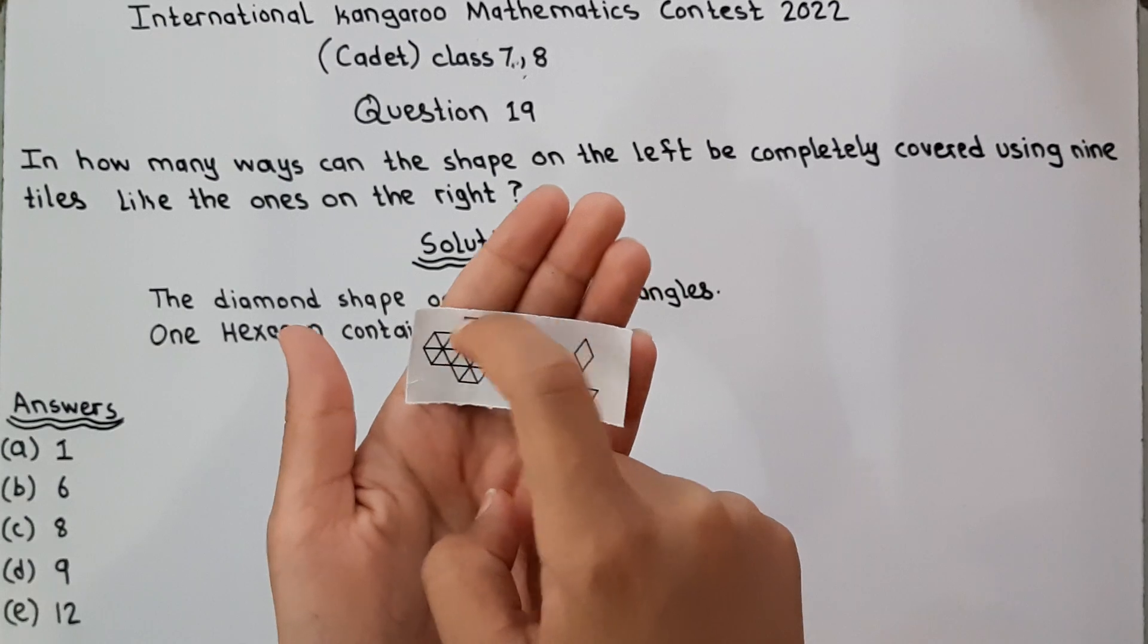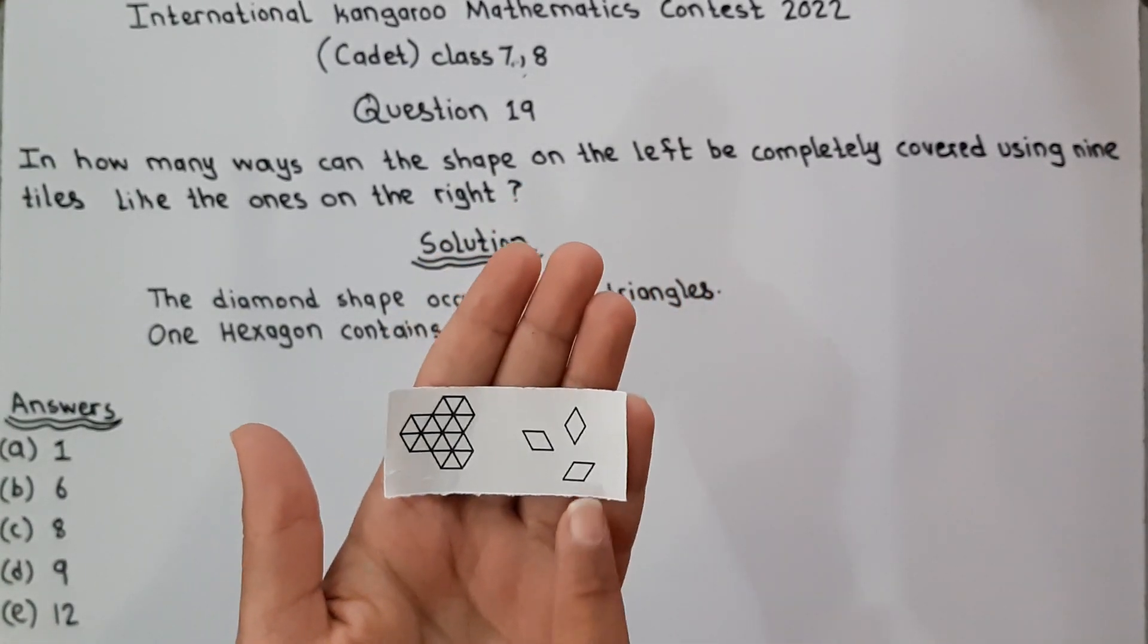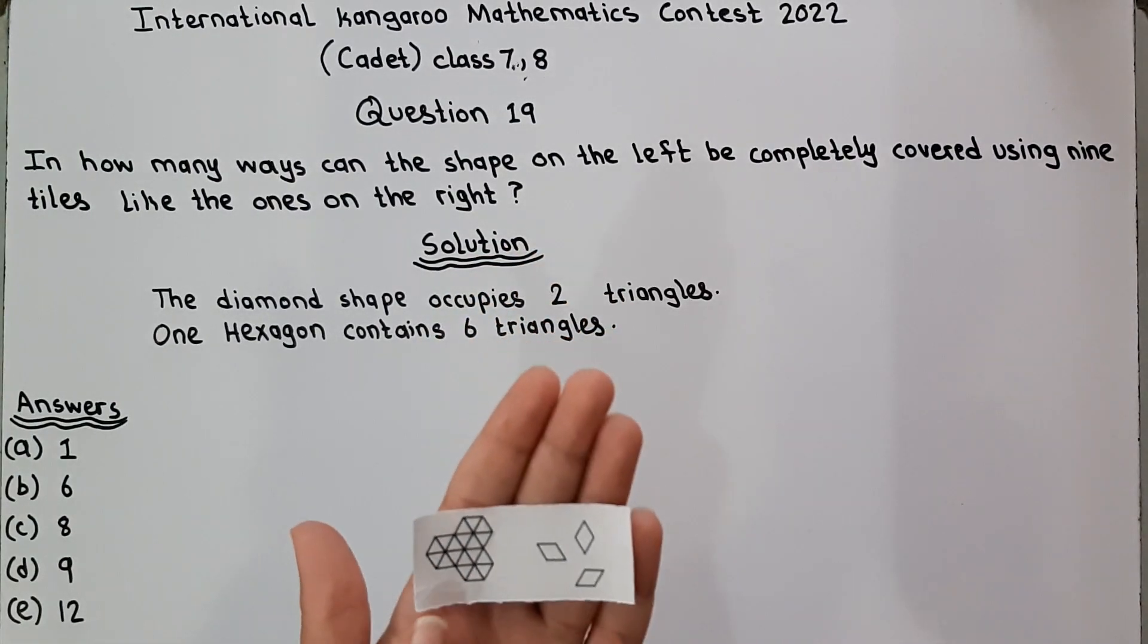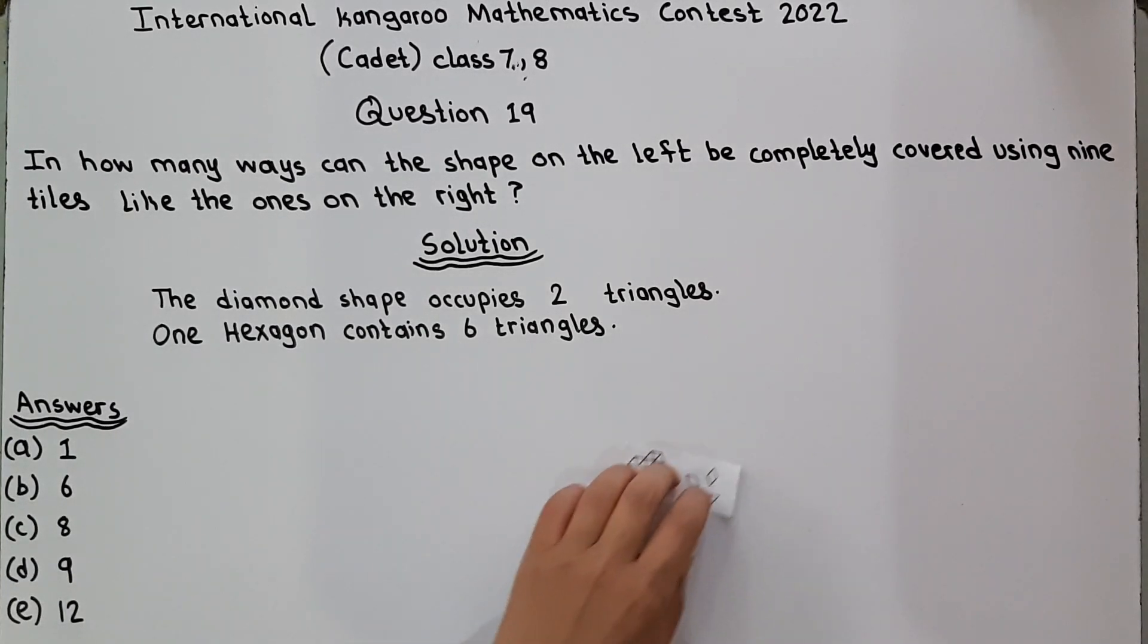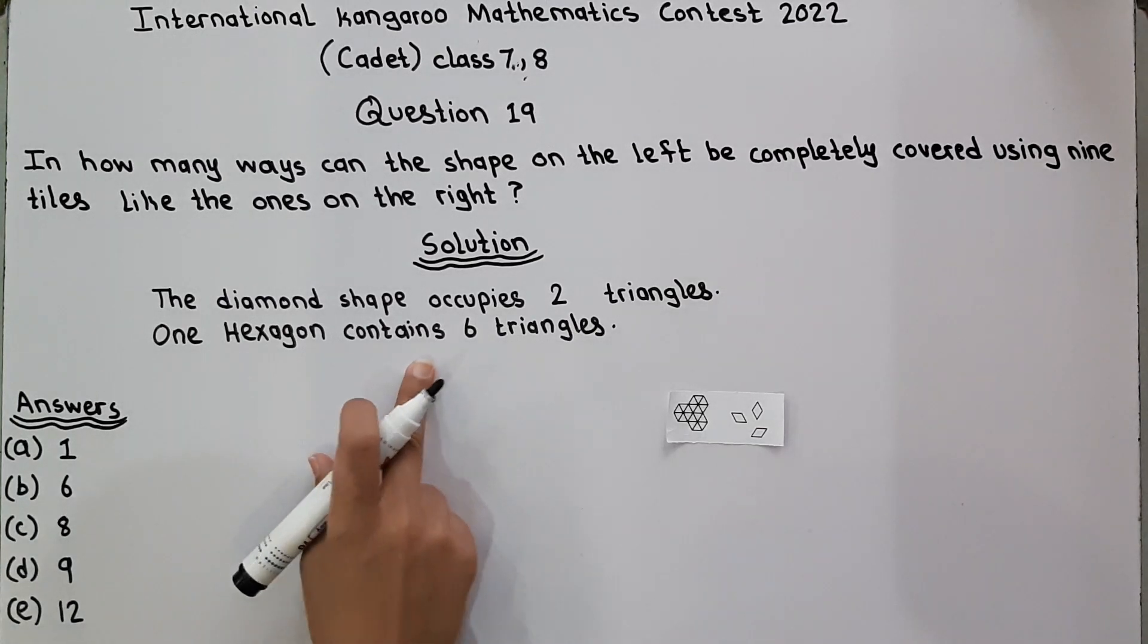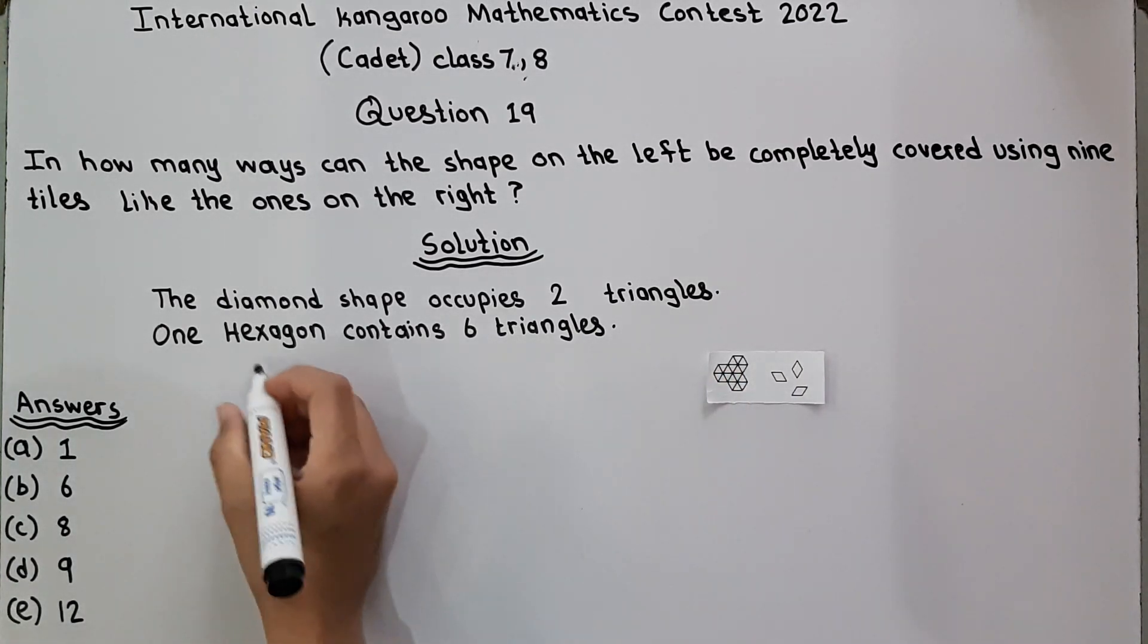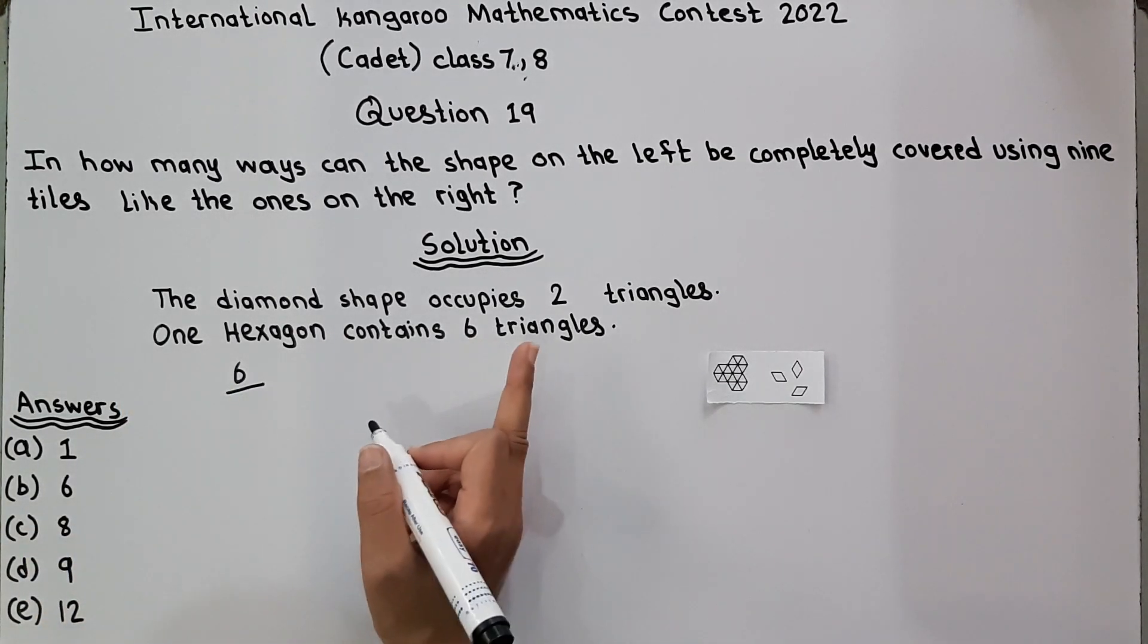One, two, three, four, five, six. So we know that one hexagon contains six triangles, and this shape is the diamond shape which consists of two triangles. Now we have to find how many tiles like these on the right can cover one hexagon. So one hexagon contains six triangles, and the diamond shape occupies two triangles.